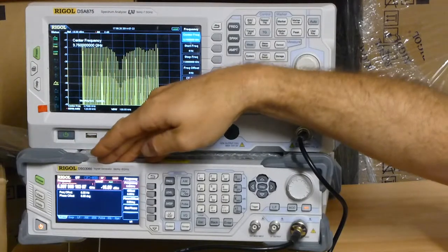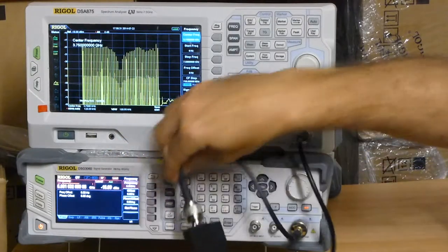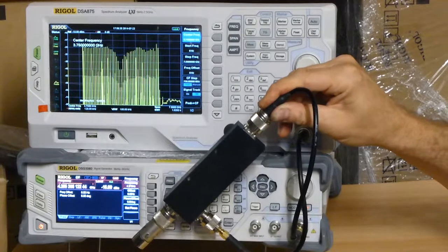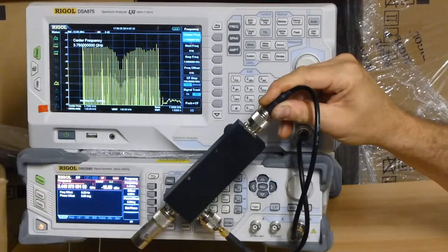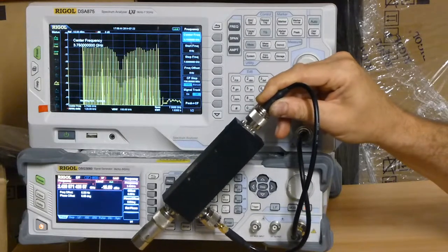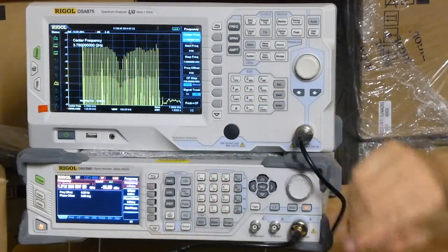I'm using it today as a sweep generator, and as you can see I've been testing a directional coupler. Normally for EMC you'd be testing using a LISN for conducted emissions or using some near field probes which we also stock, or you'd be using an antenna of some sort.